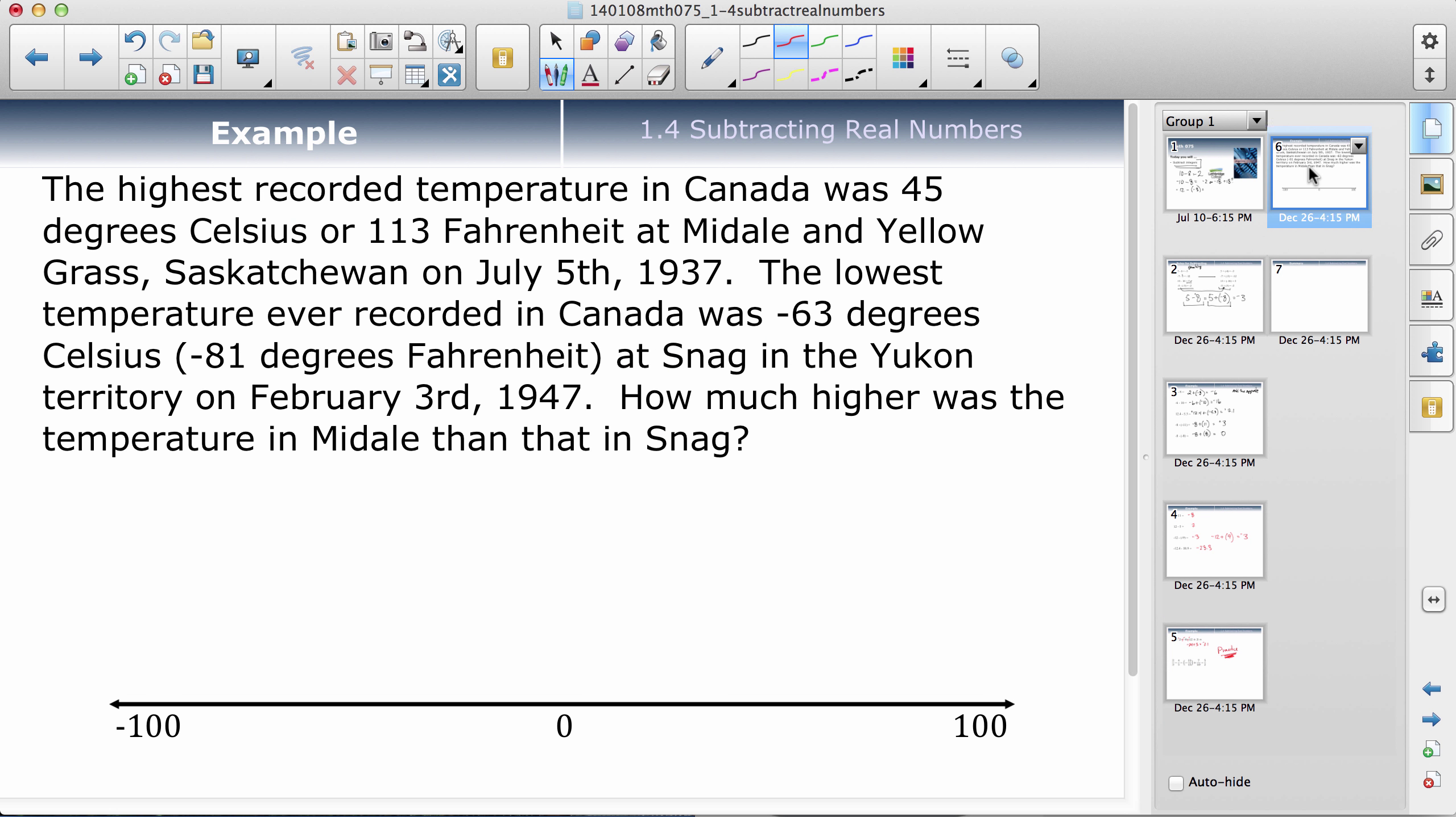Practice some more. Here's just one last little question where you could use a negative sign to help you answer it. Highest record temperature in Canada was 45 degrees Celsius. The lowest temperature ever recorded in Canada was negative 63. So negative 63 is down here somewhere. And positive 45 is up here somewhere.